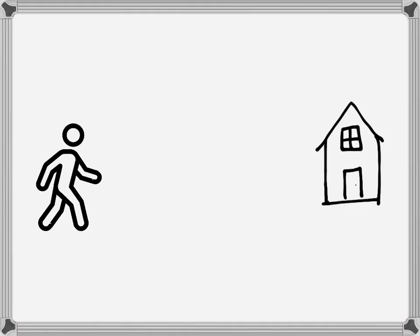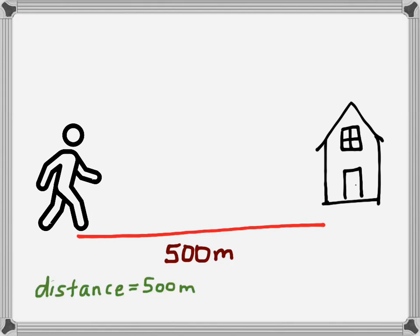Let's look at another example. Let's say we're walking home from school. We're standing at the corner and then we walk to our house, and that distance happens to be 500 meters. So we've walked 500 meters from the corner to our house. Our distance traveled is 500 meters. In this case, our displacement is also 500 meters, because we started at the corner and we've gone 500 meters away from our starting position.